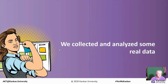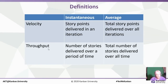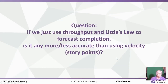We collected and analyzed some real data — something I did with a partner, Chris Verhoff, a few years back. We looked at data collected by Vasco Duarte: 55 projects from nine companies. When I'm talking about velocity, I mean story points delivered in an iteration, or average total points delivered over all iterations. When talking throughput, it's the number of stories delivered over a period of time, and the average total number of stories delivered over all time. So if we just use throughput in Little's Law to forecast completion, is it any more or less accurate than using velocity and story points?